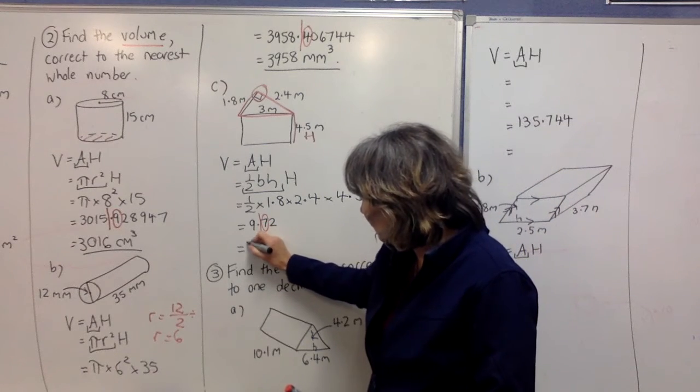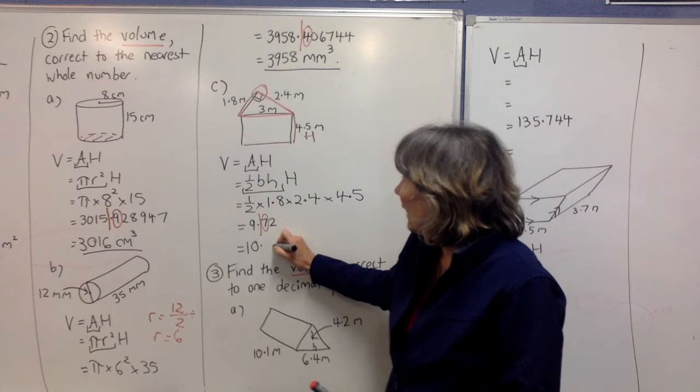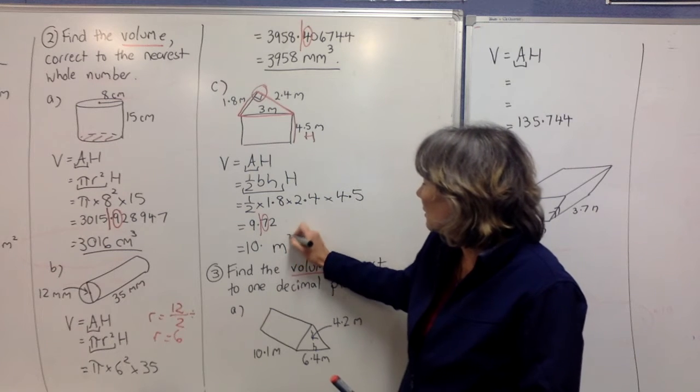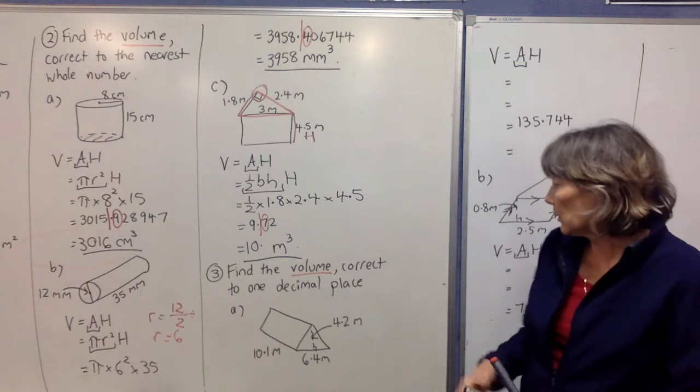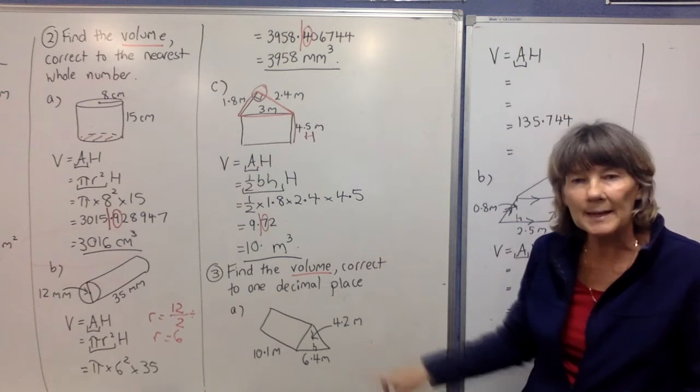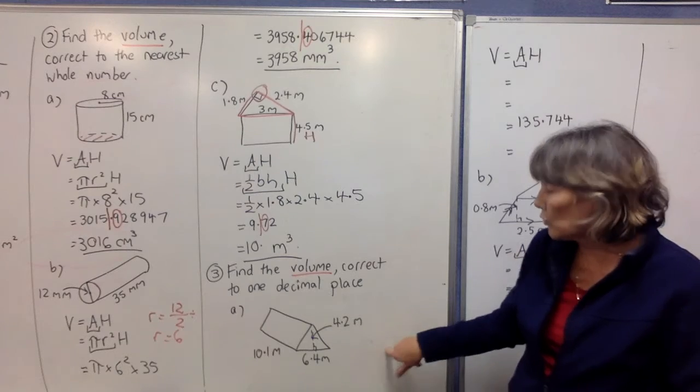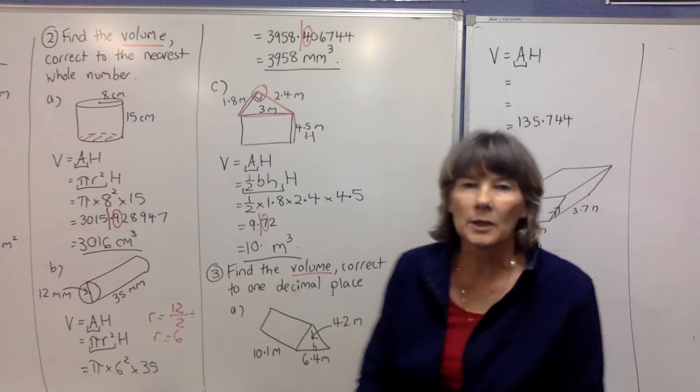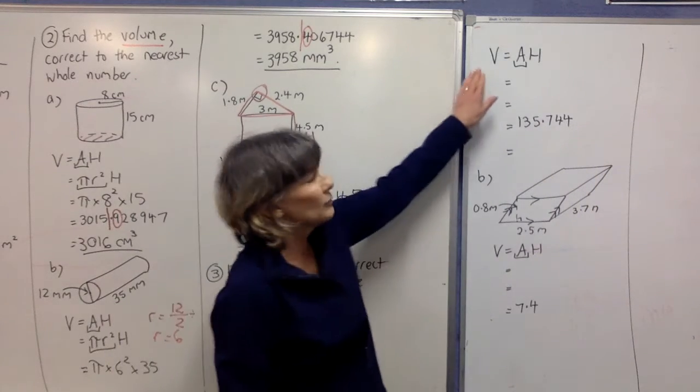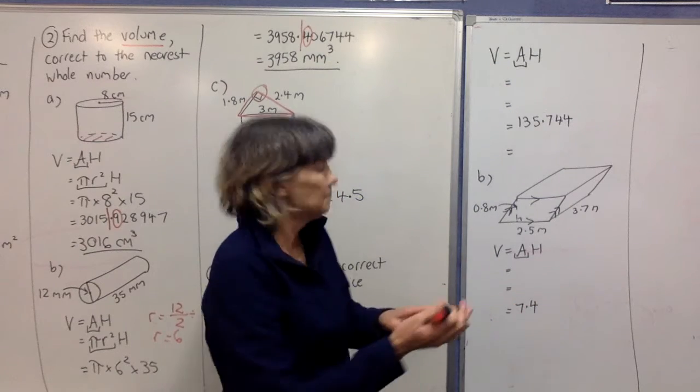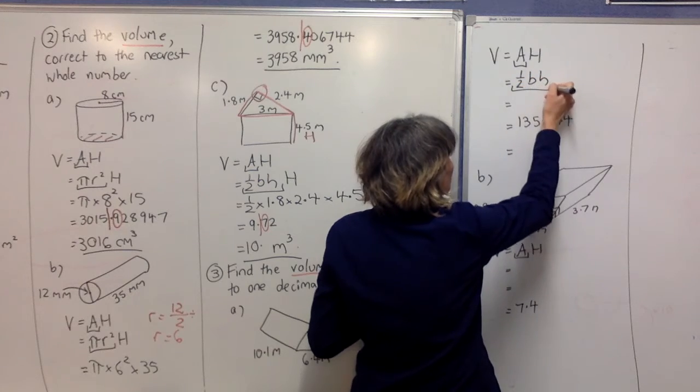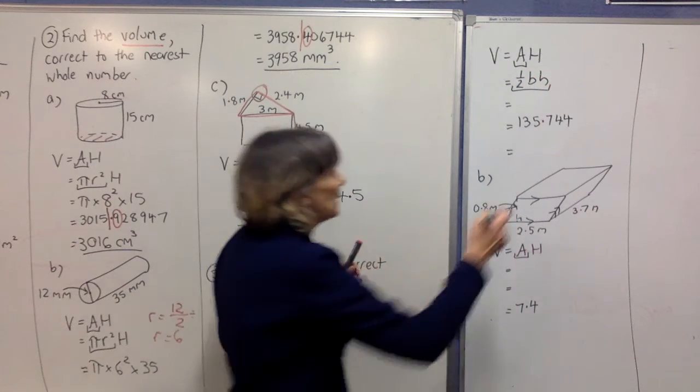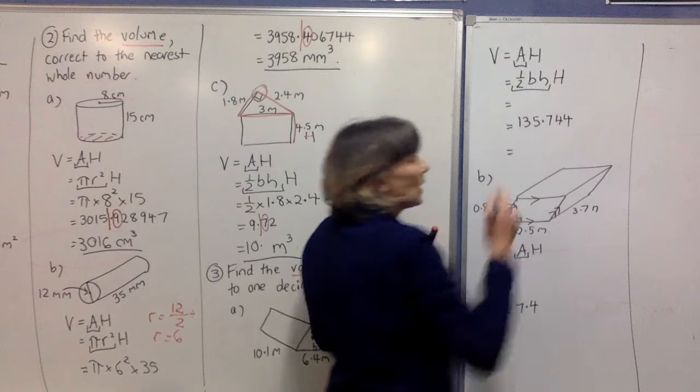Now in number three, we're doing the volume correct to one decimal place. Again, we have a triangular prism, so we're going to start with our formula V=AH for any prism. In place of A, we're going to put the area of a triangle formula, and then we're going to put our capital H on the end for the perpendicular height of the prism.